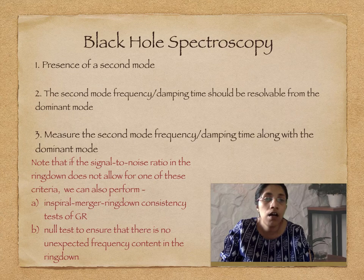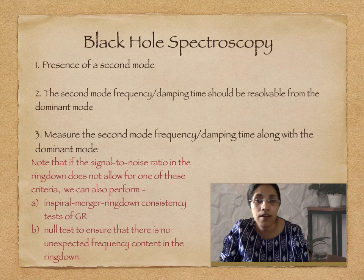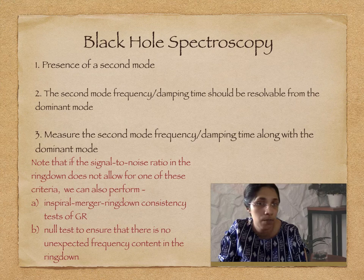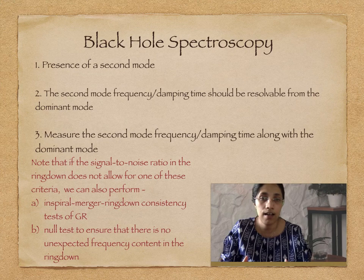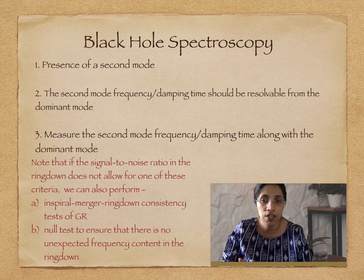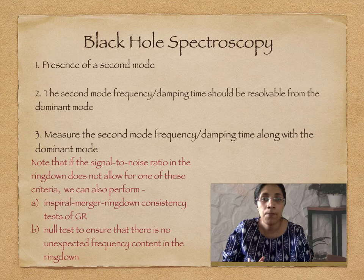Black hole spectroscopy has been used in slightly different contexts in the literature, so I shall define what I mean by it for this talk. By black hole spectroscopy, I mean we should be able to test for the presence of the second mode, resolve the frequency and damping time of the subdominant mode from the dominant mode, and measure the frequency of both modes with certain accuracy. Alternatively, there are other tests such as the inspiral-merger-ringdown consistency test, and null tests where you search for unexpected frequency content in the ringdown. These can be done with a slightly smaller SNR.